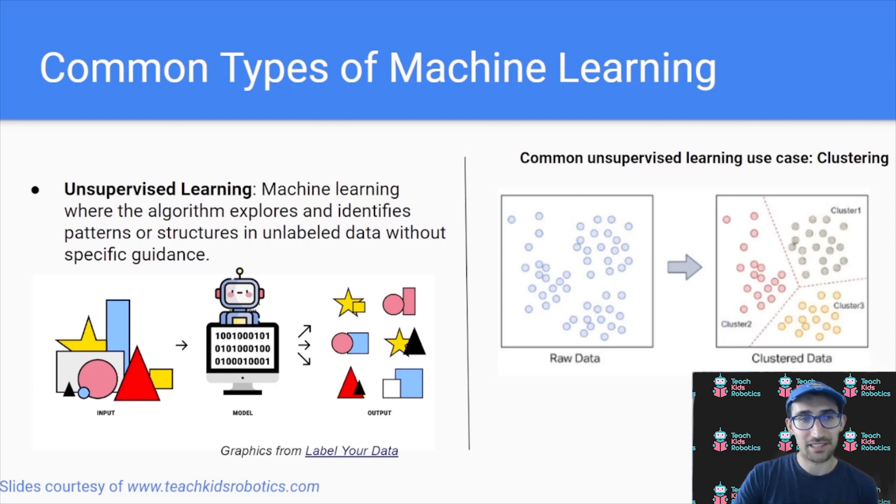We also have unsupervised learning, which is machine learning where the algorithm explores and identifies patterns or structures in unlabeled data without specific guidance. In this case, consider we had shapes, but we never had labels assigned to the shapes. Our algorithm or our robot doesn't know what is a circle or what is a square. In this case, the algorithm can just come up with groupings on its own based on associations.